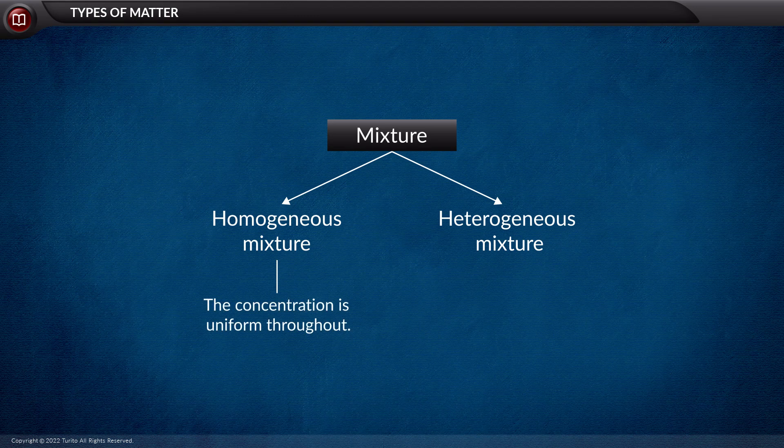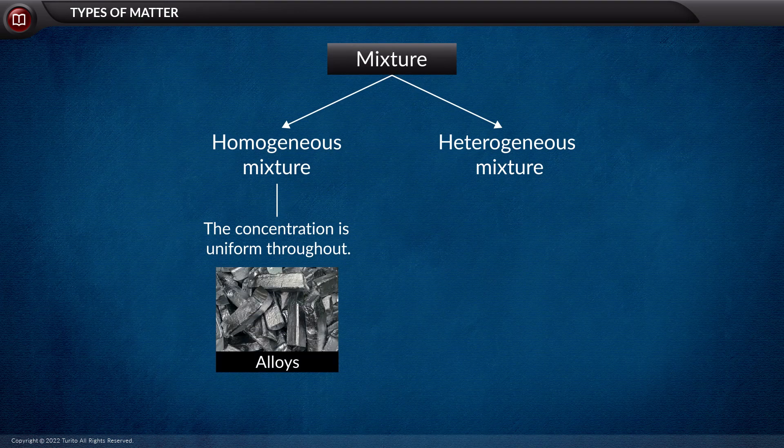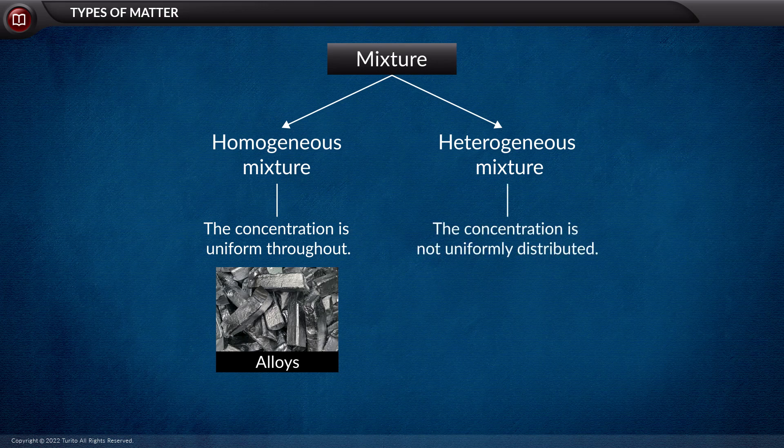The concentration of the homogeneous mixture is consistent throughout, for example, an alloy. On the other hand, a heterogeneous mixture is the one having a non-uniform distribution.